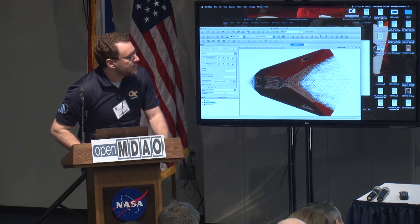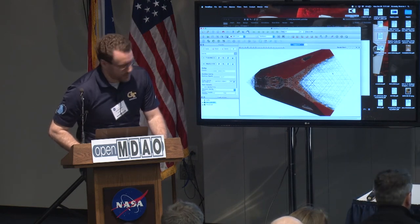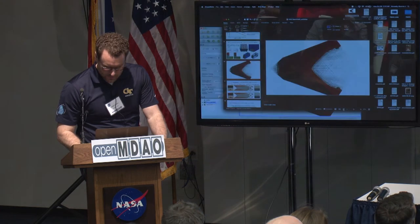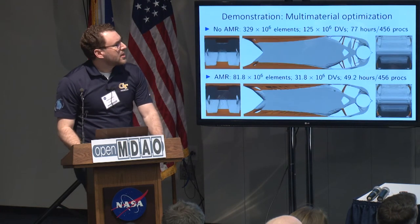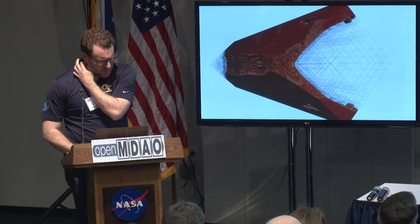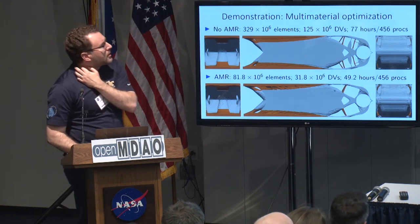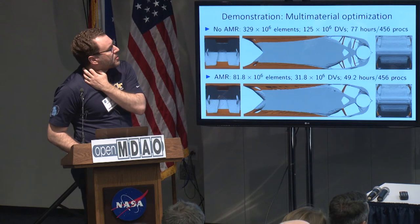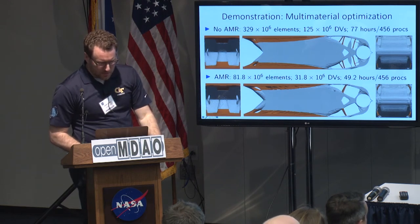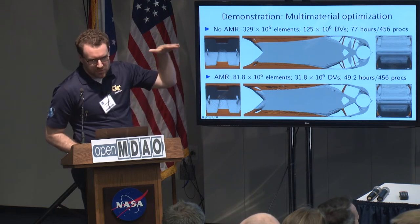In this case, we're approaching this via a total reinitialization of the problem. This particular case has about 350,000 design variables at the final design. In the largest cases, we've gone up to problems with 125 million design variables and about 330 million elements. We've also done adaptive mesh refinement in order to reduce the size of the meshes.